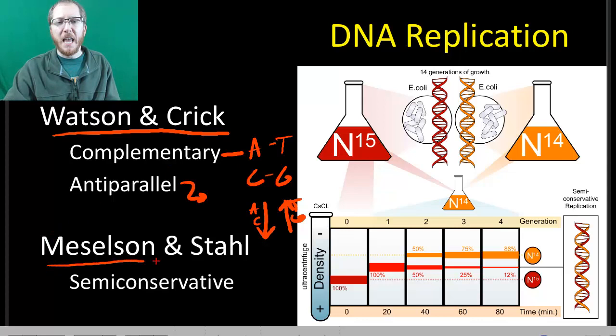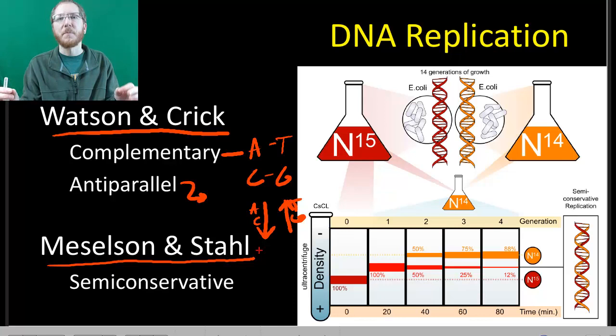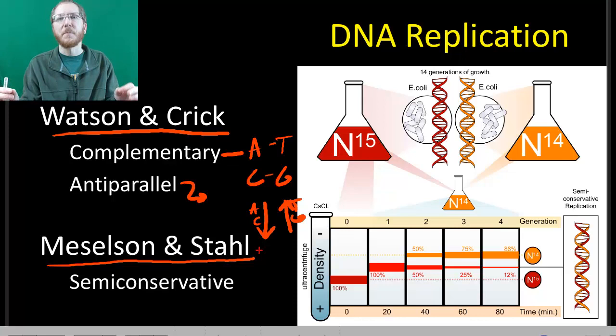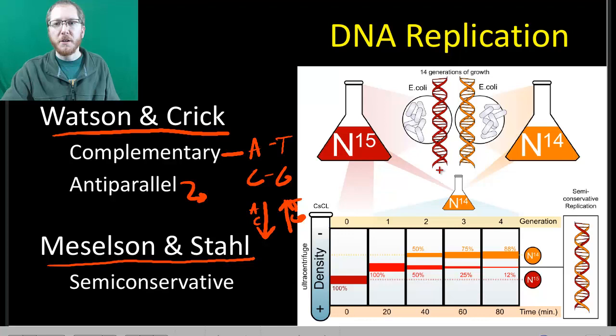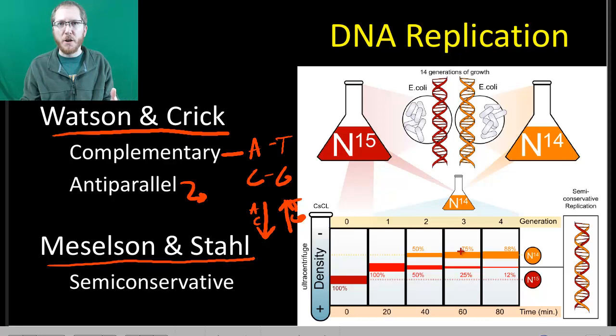Meselson and Stahl are the guys that came up with how this process works. They weren't sure if you split the DNA and made copies, whether the originals went back together and copies stuck together, or if it was half and half. They weren't sure if it was conserved DNA replication with one completely old strand and one completely new one, or semi-conservative where each strand was half old, half new. There was also a dispersive model with bits and pieces. That was a weird one. It was wrong.